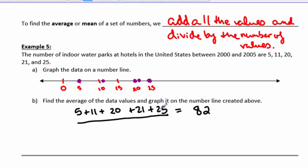Now we also need to divide this by the number of numbers that there were. So originally there were 1, 2, 3, 4, 5 numbers. So we need to divide this by 5 to get the average. So 82 divided by 5 is 16.4.